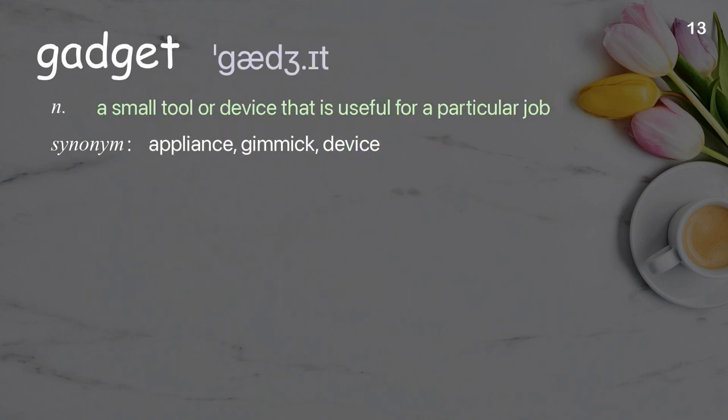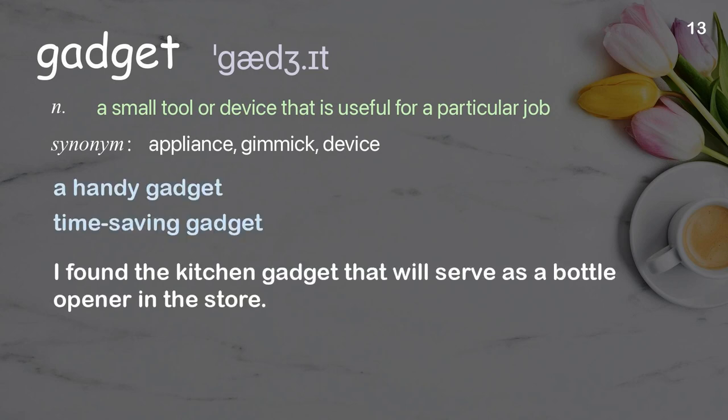Gadget: A small tool or device that is useful for a particular job. Examples: A handy gadget, time-saving gadget. I found the kitchen gadget that will serve as a bottle opener in the store.